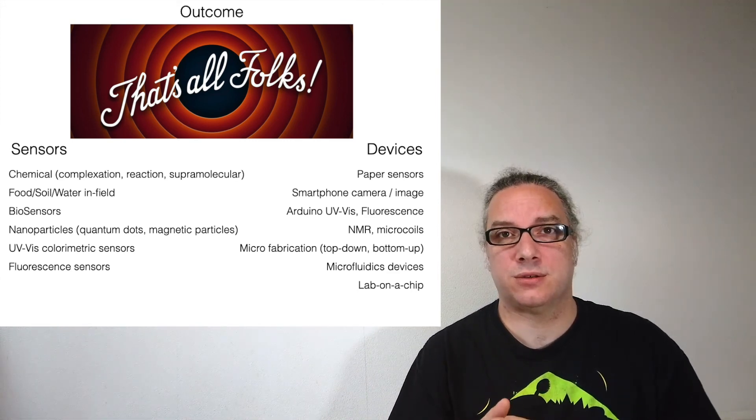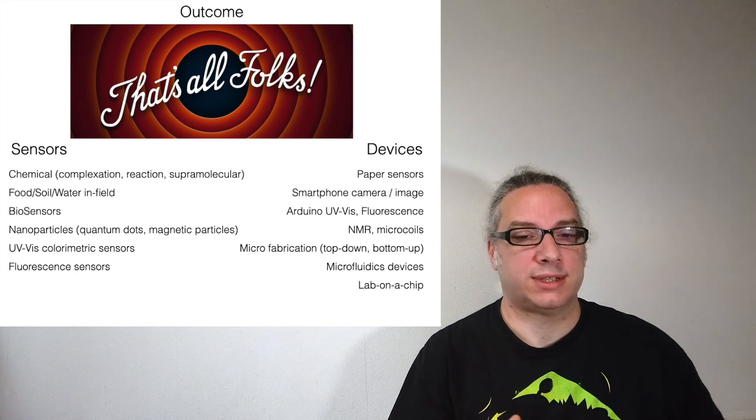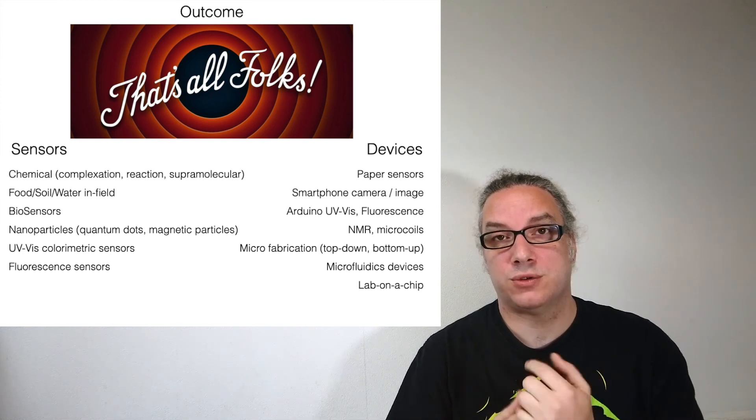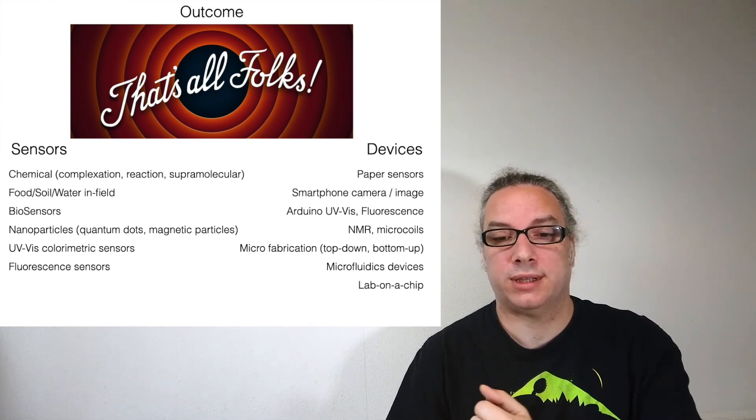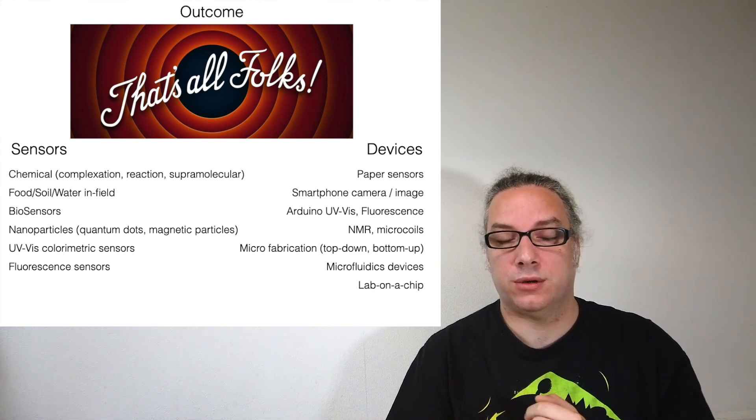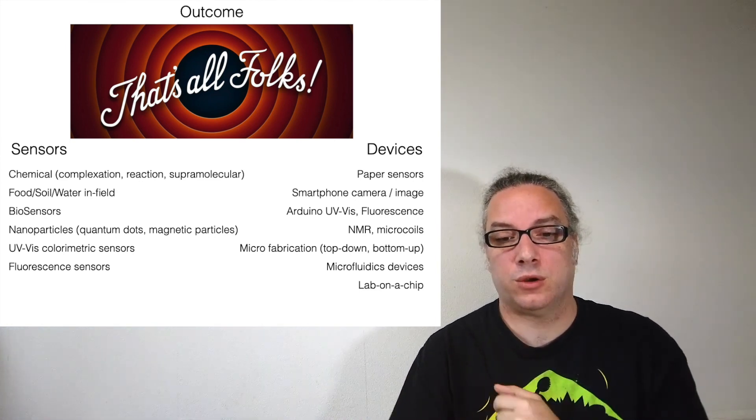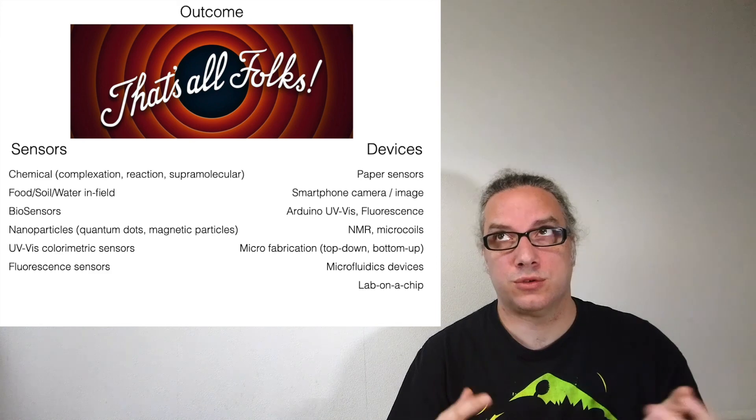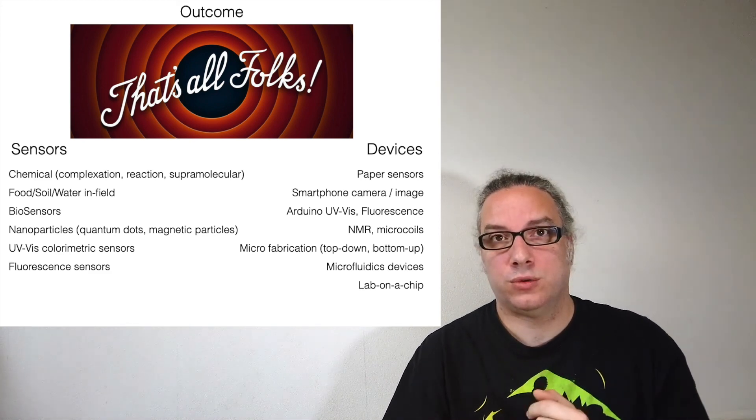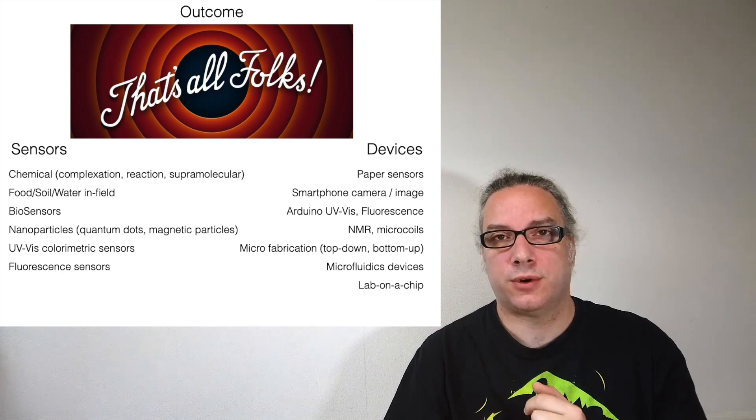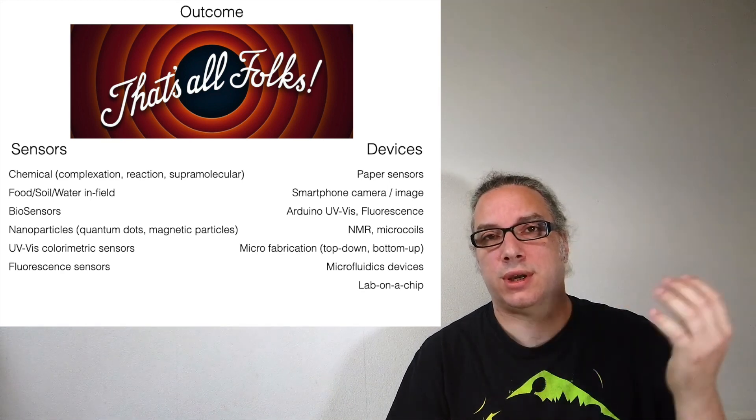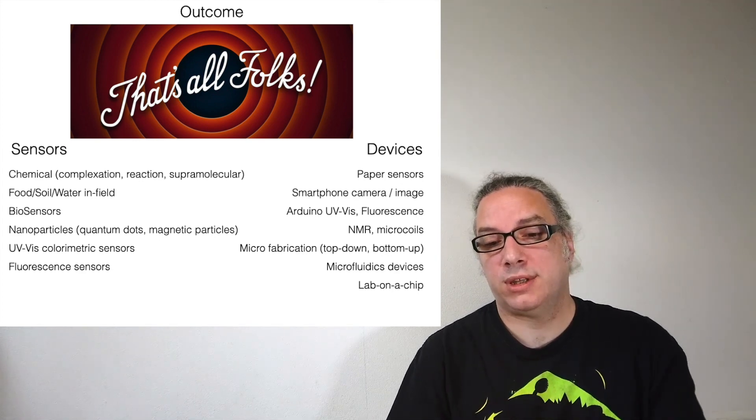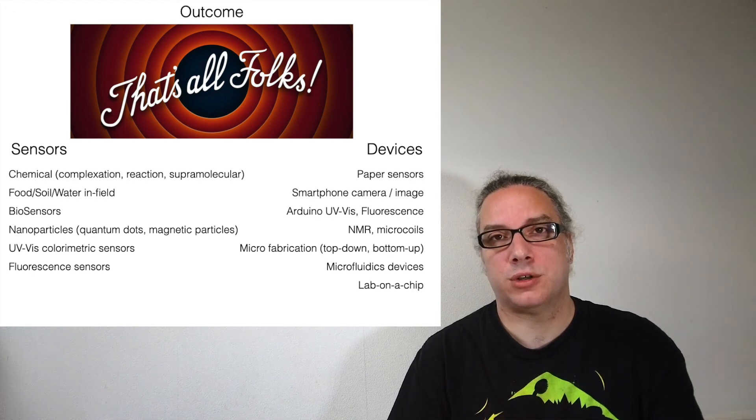On the devices part, we are going to see paperworks, how to use a smartphone for making a colorimetric detection. You will make again the Arduino UVVs but also an Arduino fluorimeter. We are going to check NMR, how to make NMR microcoils, how to make microfluidics inside the NMR. We are going to talk a lot about microfabrication because we are going to see a top-down approach but also a bottom-up approach. We are going to check a lot of different microfluidic devices, and we are going to discuss lab-on-a-chip or organ-on-a-chip.